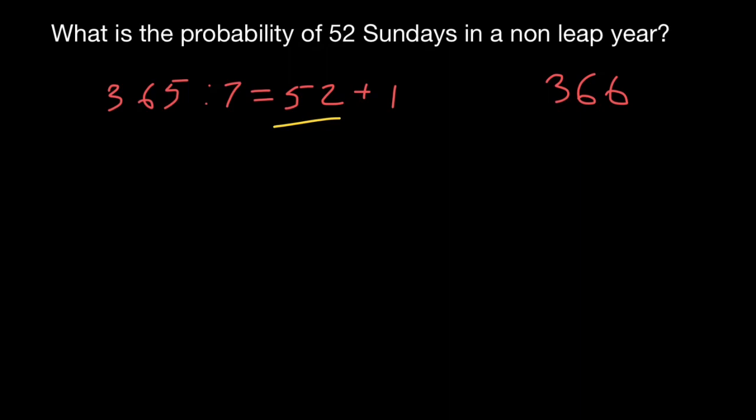And probability that we are going to have 53 Sundays is, take a look, we have one extra day. And on this extra day, any day of the week can happen. For example, Monday, Tuesday, Wednesday, Thursday, Friday, Saturday, and Sunday have equal probability to happen on this one extra day.